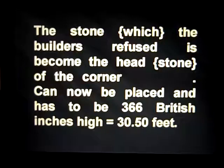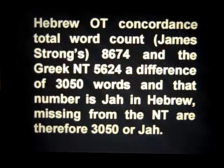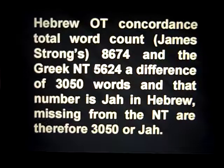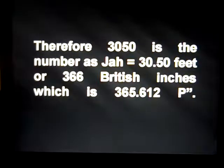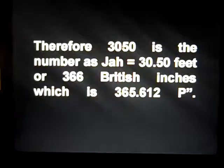Now it can be placed, and it has to be 366 British inches high, or 30.50 feet — matching the Hebrew Old Testament concordance word total of 8,674 and the Greek New Testament word total of 5,624, a difference of 3,050 words. That number is Yah in Hebrew, missing from the New Testament. Therefore 3,050 is the number Yah, which equals 30.50 feet or 366 British inches.